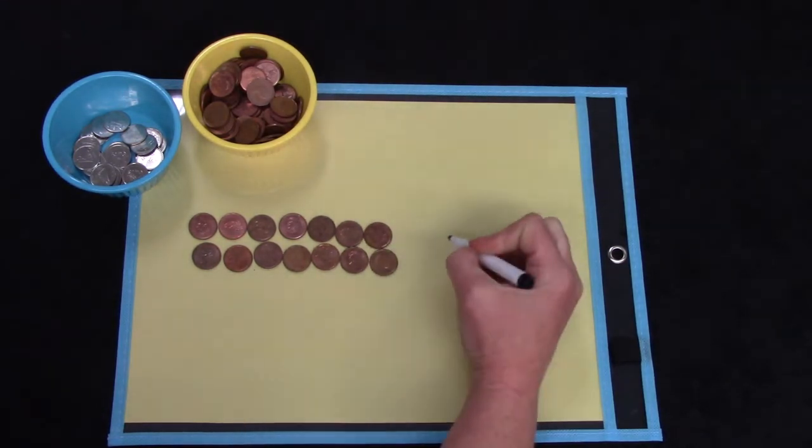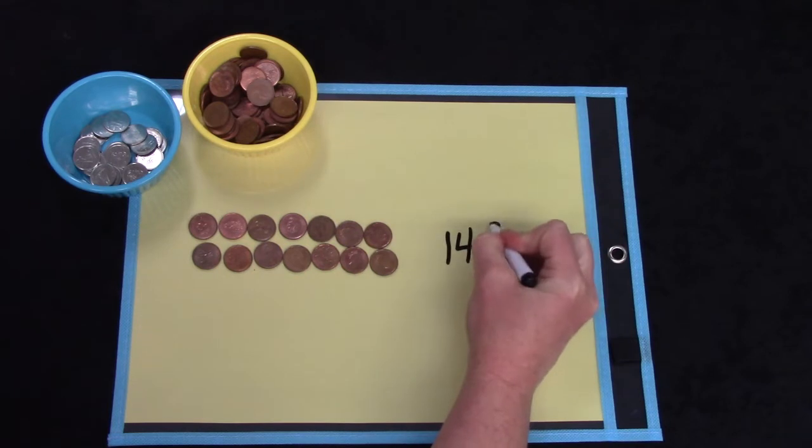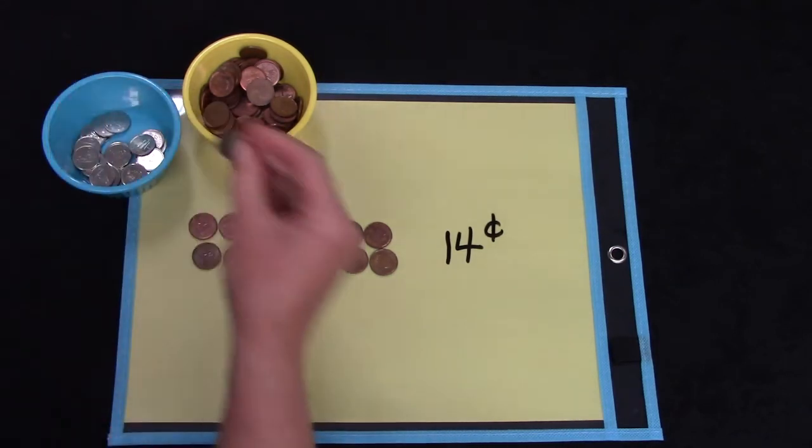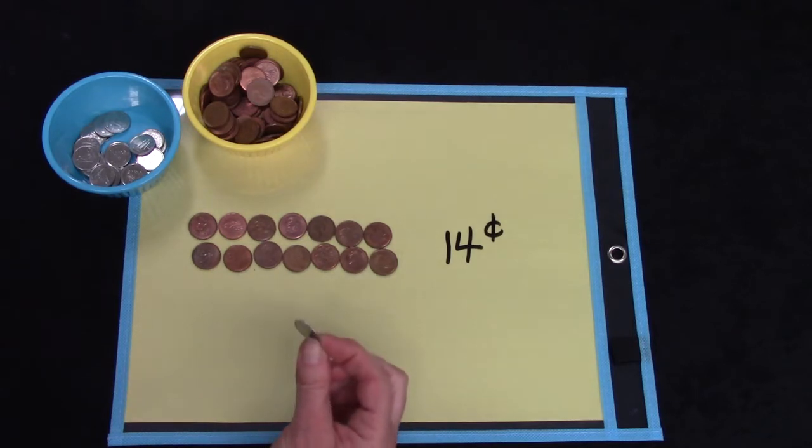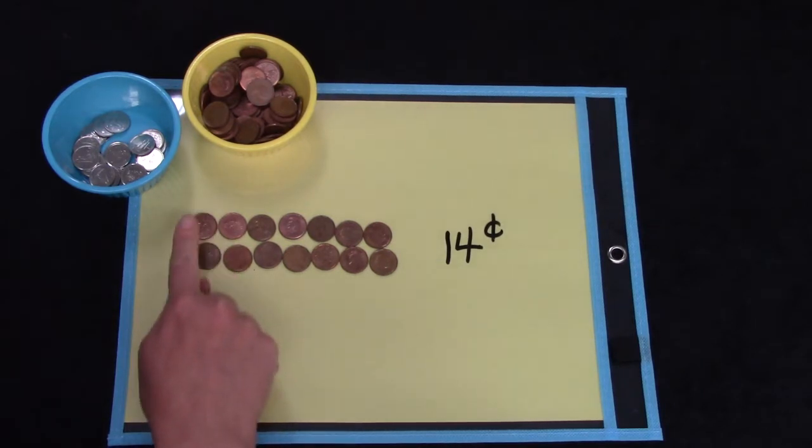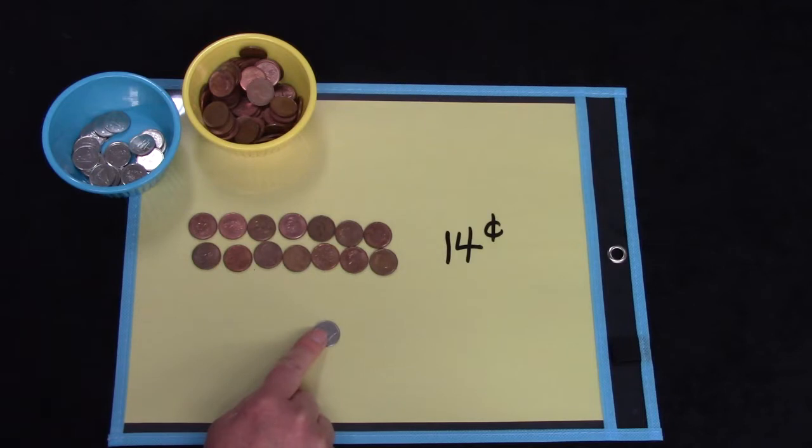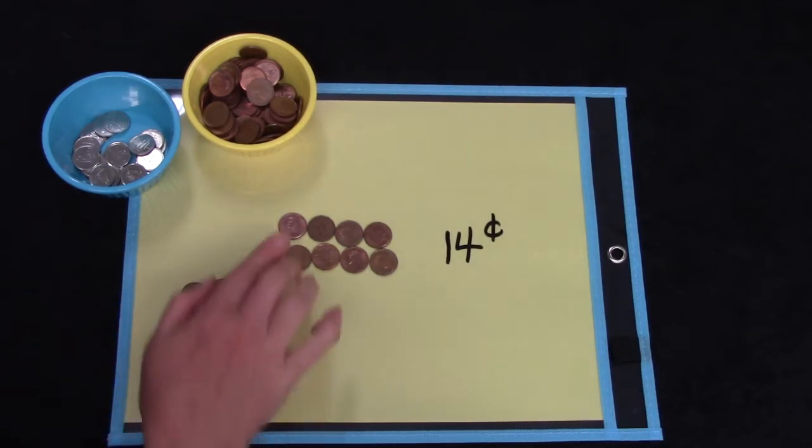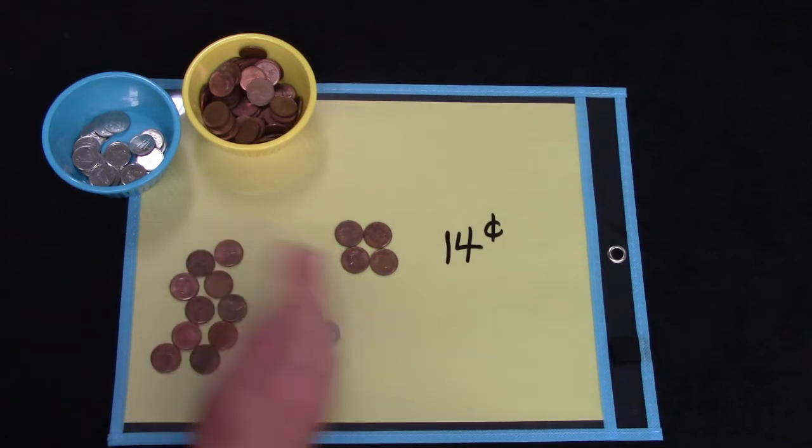I have 14 cents. How many pennies do we need to have to trade for one dime? Did you say 10? A dime is worth 10 cents. If I were to trade some pennies for a dime I would trade 10 of them. 2, 4, 6, 8, 10.